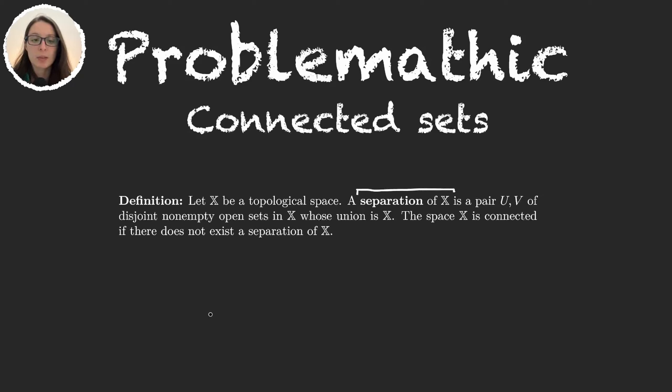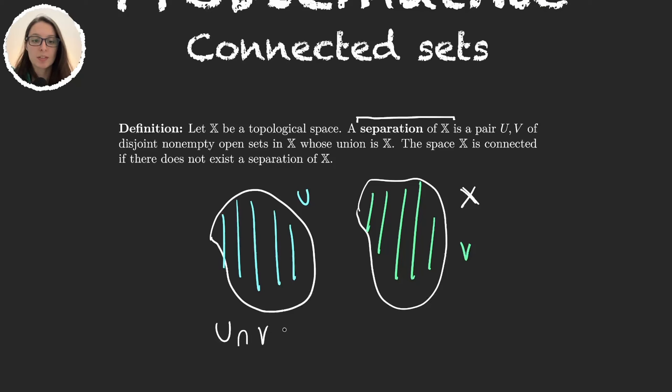Basically a separation is just two sets that form our entire space and that are disjoint. For example if these two sets form our space X then we can clearly separate it as in this set, let's call it U, and this other set, let's call it V. So obviously U and V are disjoint and their union is our entire space. We do need one more condition. We need these two sets to also be open in X. This is a separation.